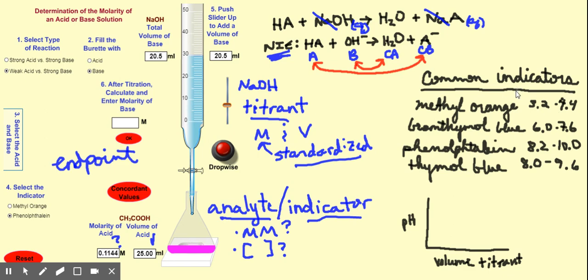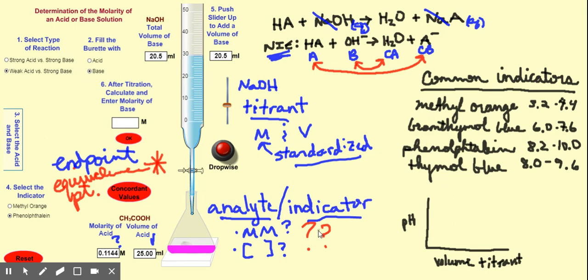The equivalence point is when essentially all of the acid in the flask has been neutralized by the base — the reaction has gone to completion. We can use the information from this equivalence point to find our unknown piece of information. If we've chosen the correct indicator, the endpoint and the equivalence point will be one and the same — they happen at the same time.